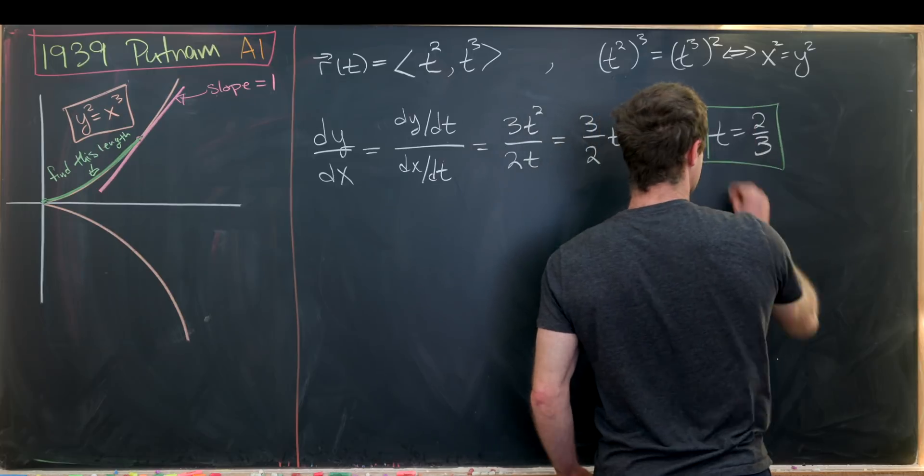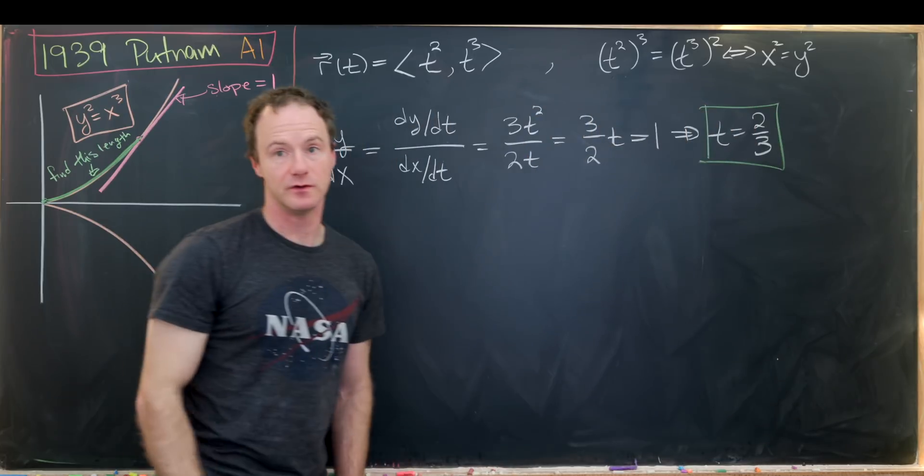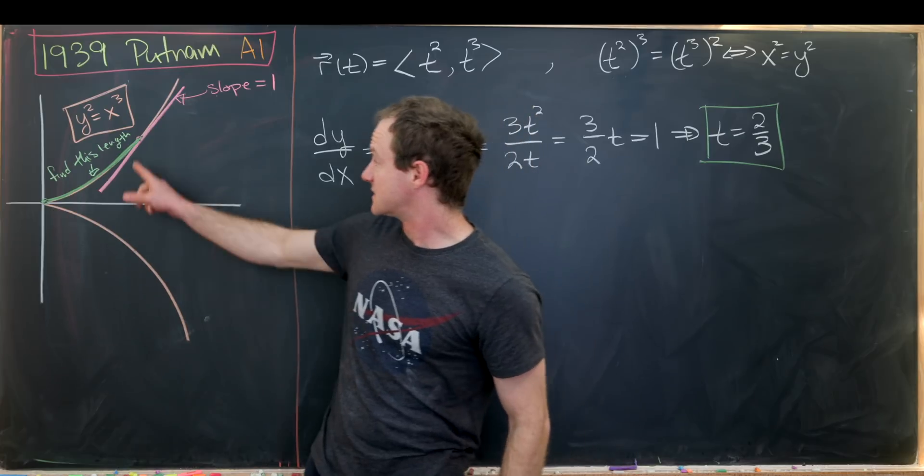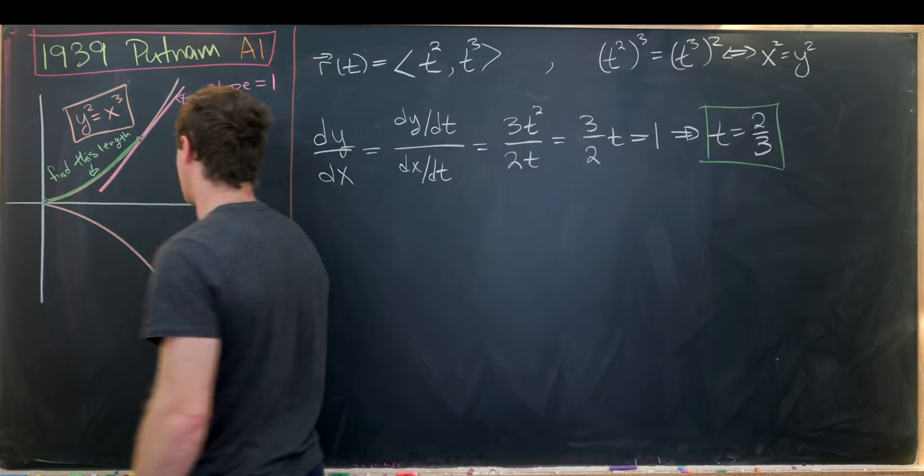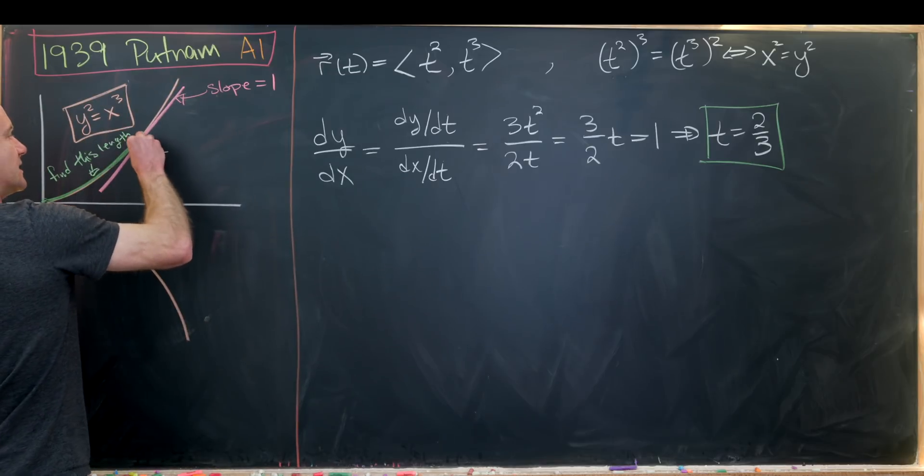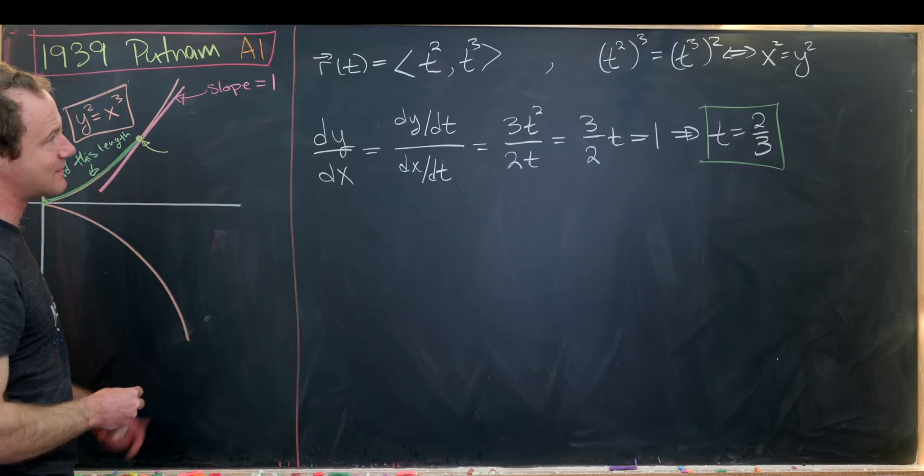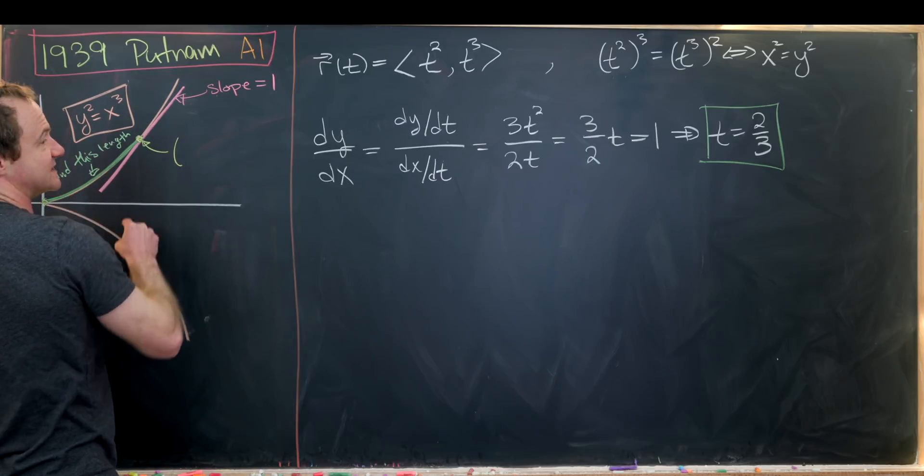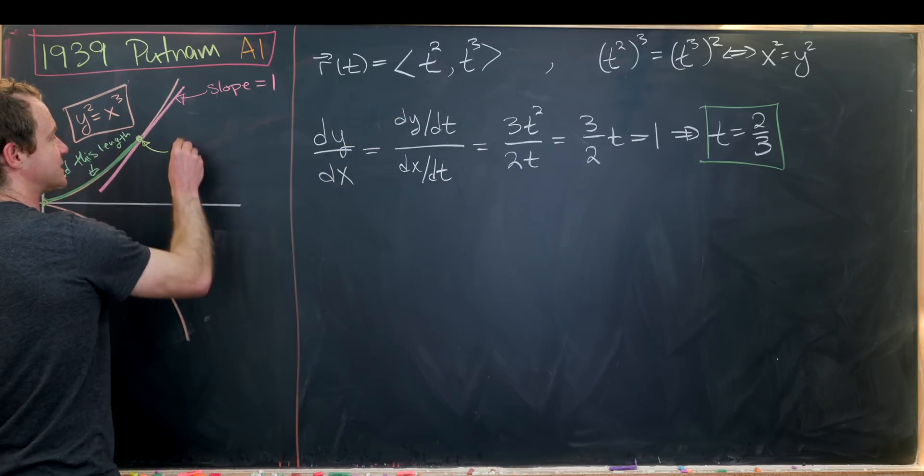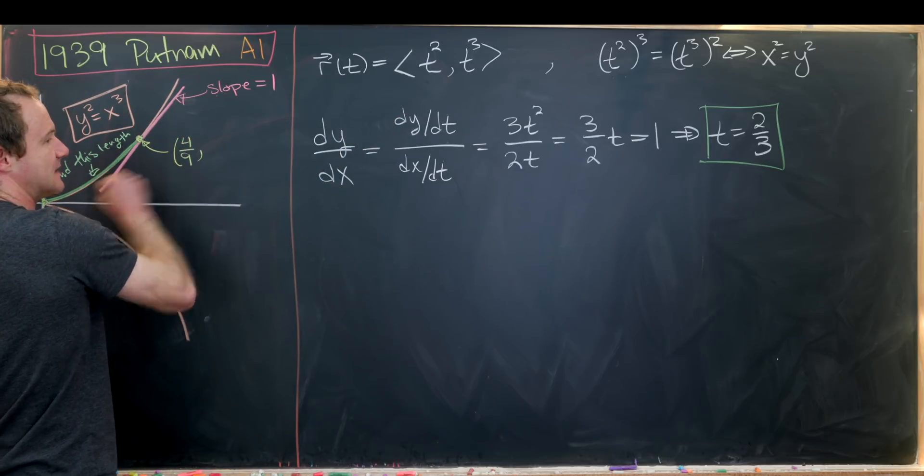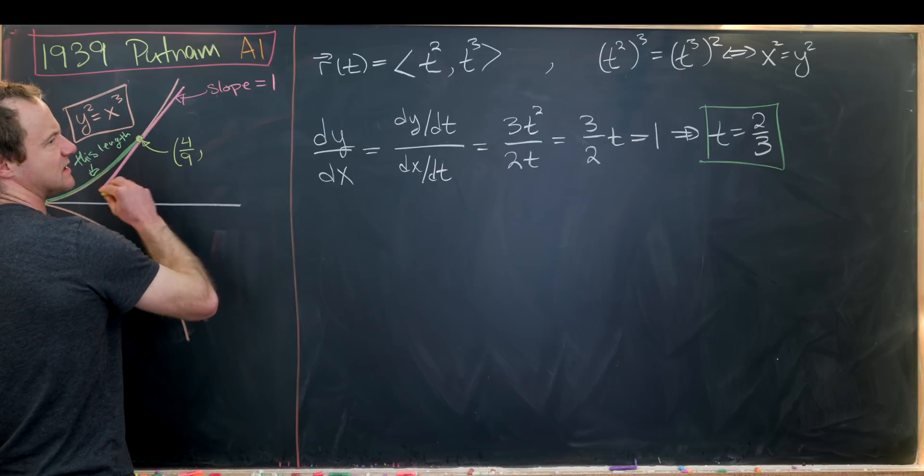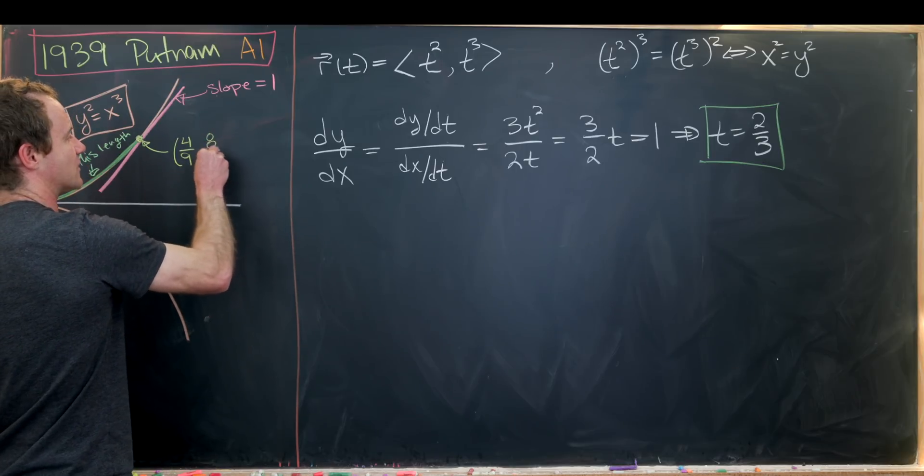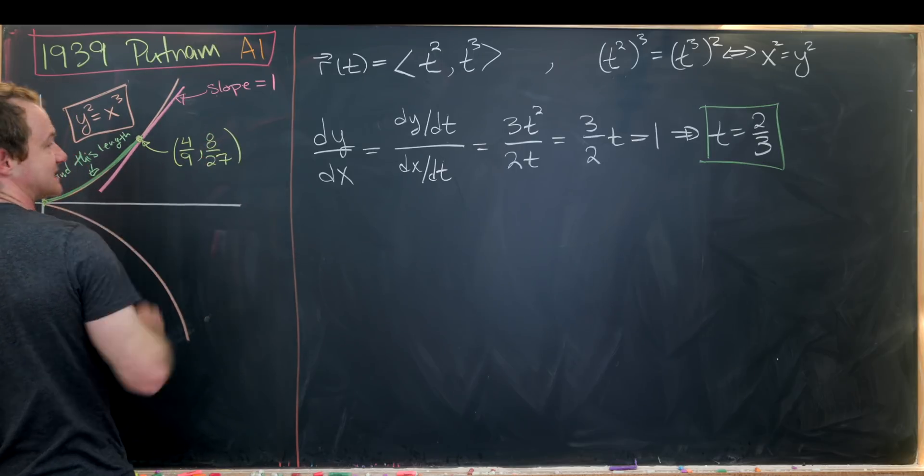So we've got our t value that gives us this point on the parametric curve. You might say, what's the x and the y coordinate here? In fact, we don't actually need that to calculate this arc length but it might be of interest. The x coordinate will be 2/3 squared so that's 4/9 and the y coordinate will be 2/3 cubed so that's 8/27. So that's that coordinate.